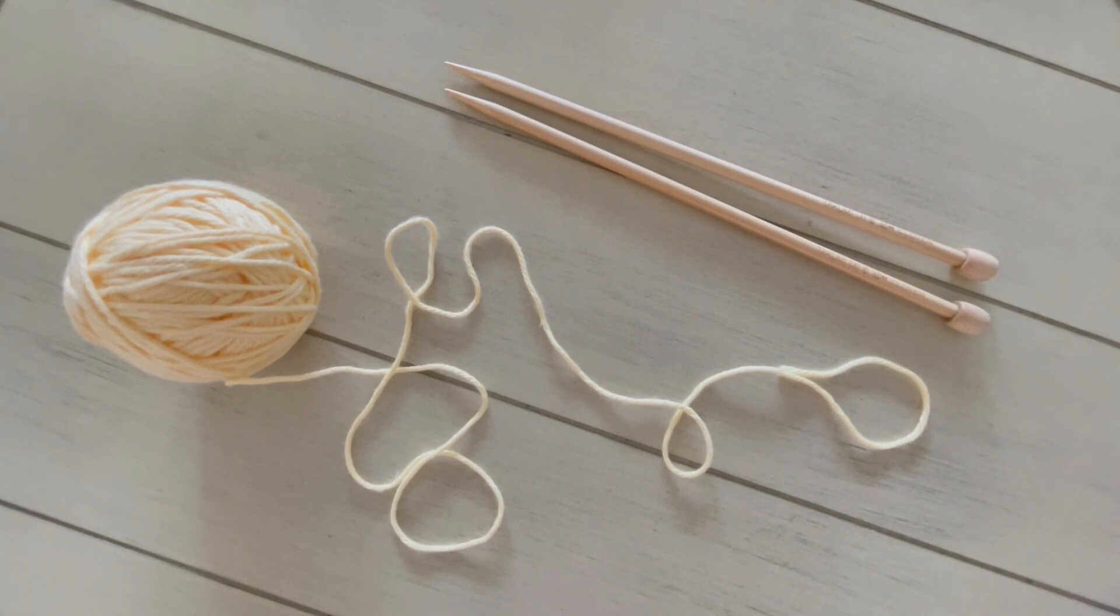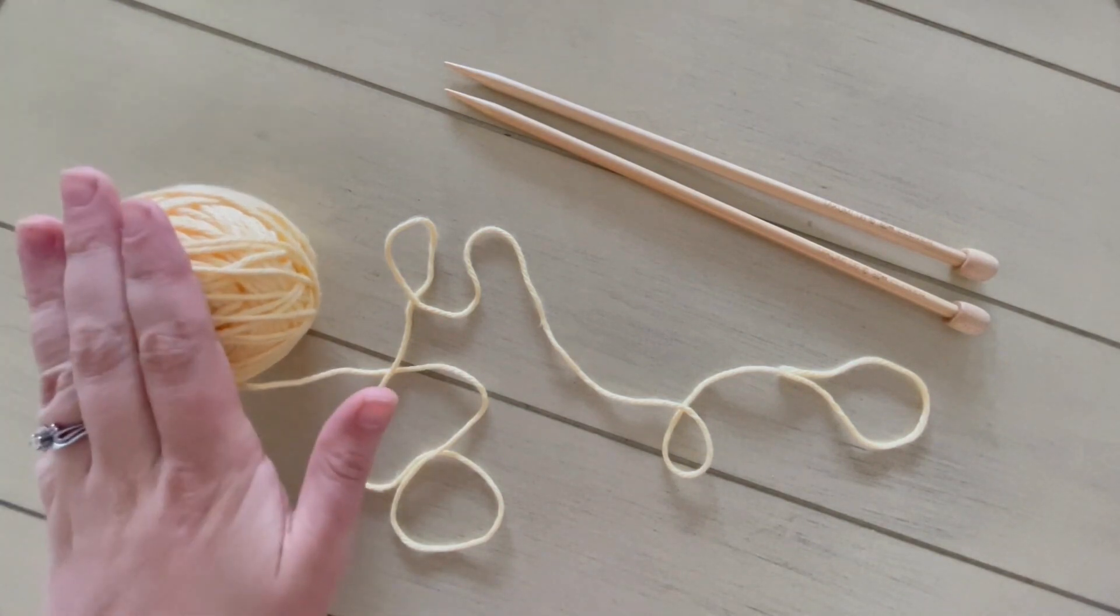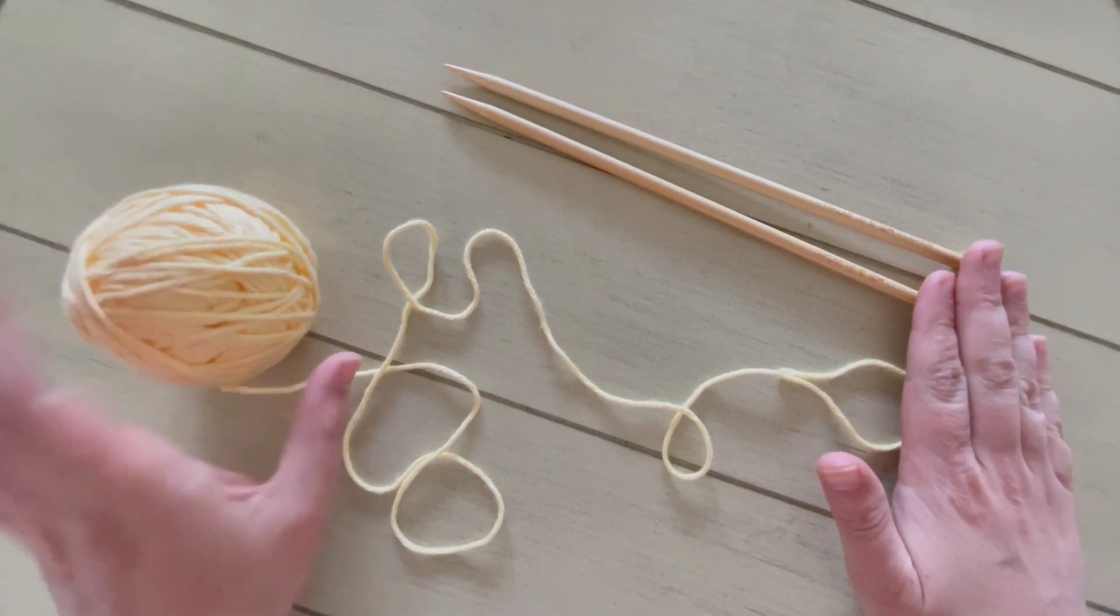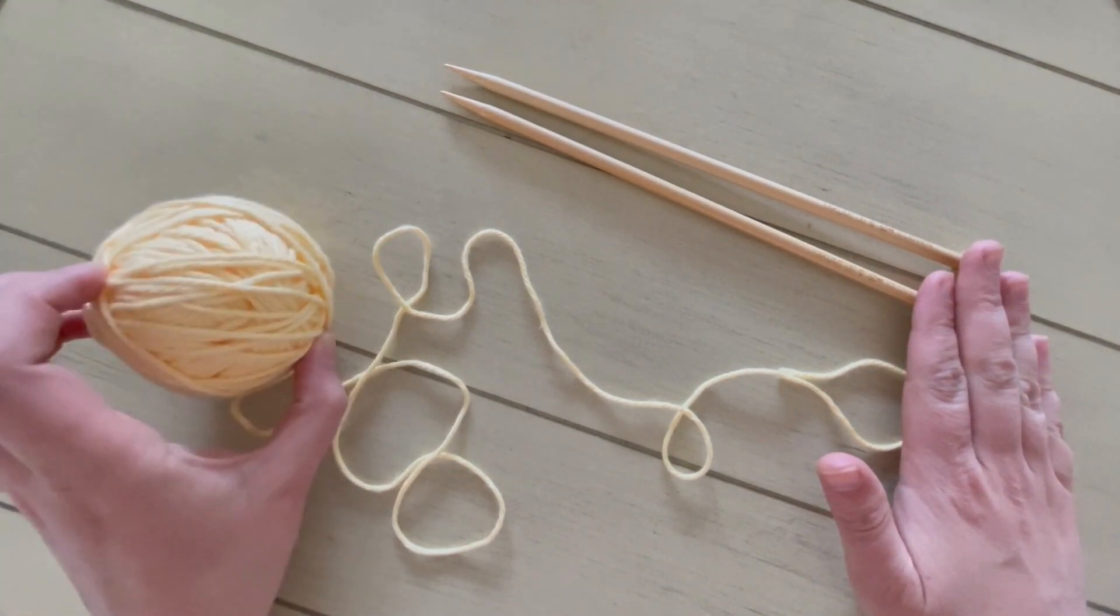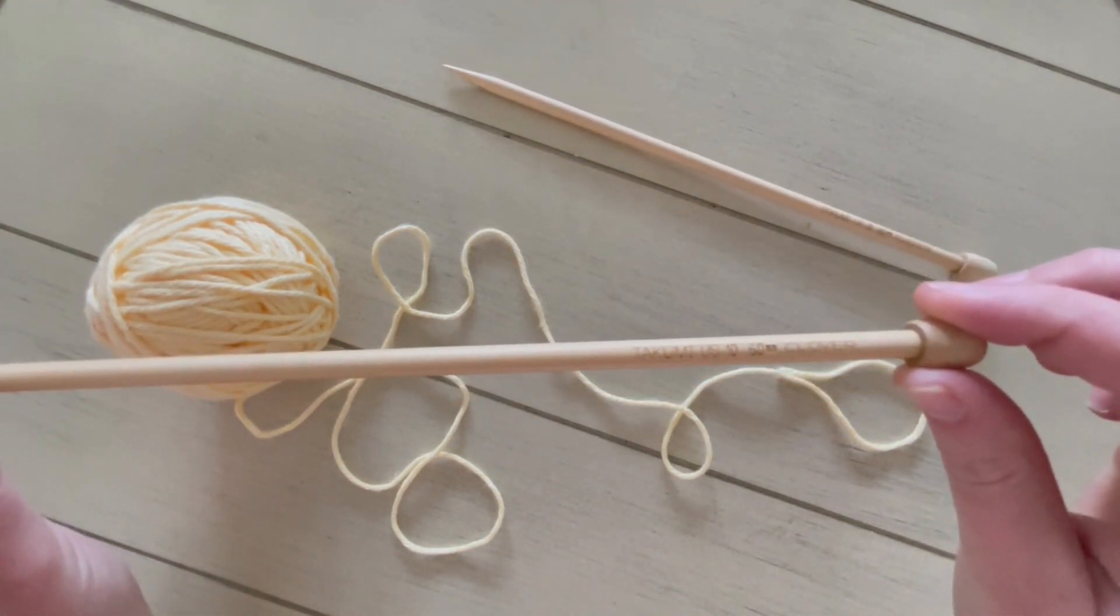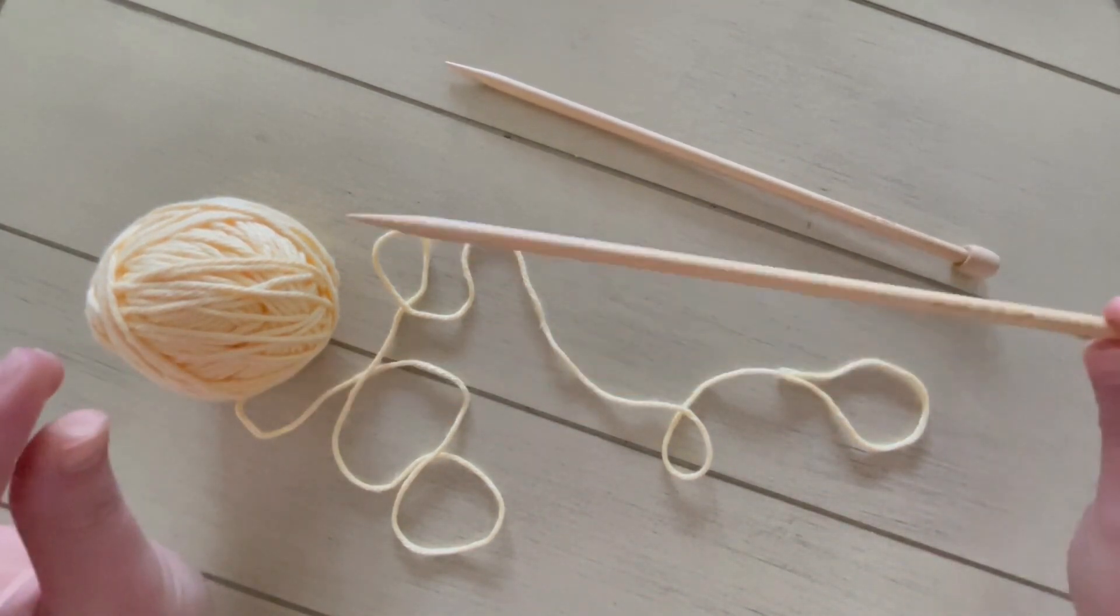In order to learn the long tailed cast on, make sure you've got a ball of yarn and a pair of knitting needles. For children I always recommend worsted weight yarn and size 8, 9, or 10 bamboo knitting needles. I've got a pair of 10 knitting needles here.